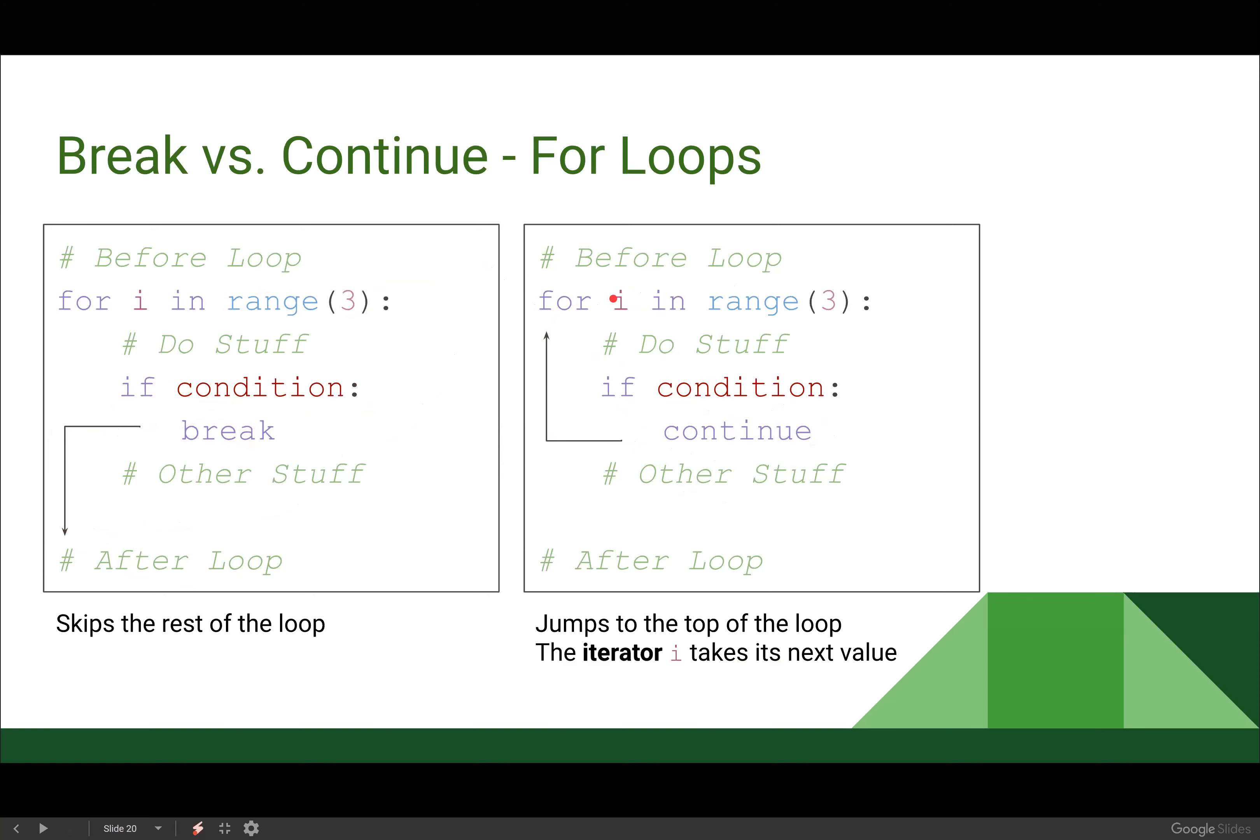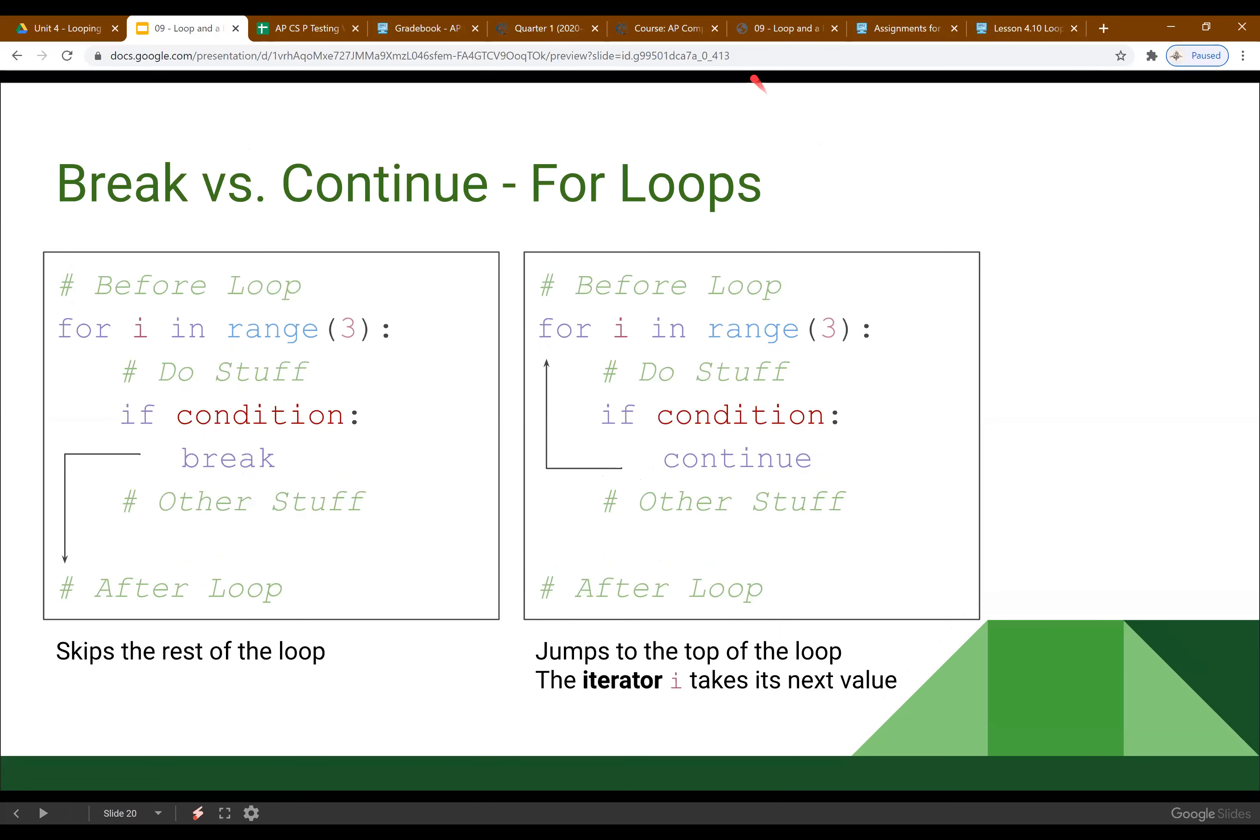So we have our for i in range 3, i is going to equal 0, 1 and 2. If we continue, the value of i is going to shift to our next value in the sequence. If it was the last value in sequence, our loop is just going to end as it normally would. Does how we use break and continue to kind of edit our loops and how they run make sense? Cool. All right, I will stop sharing.